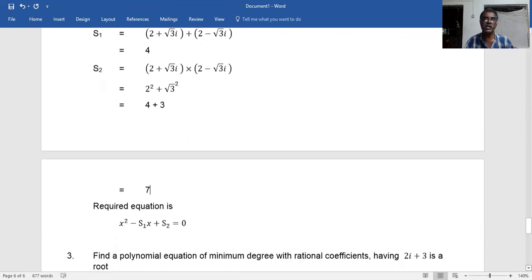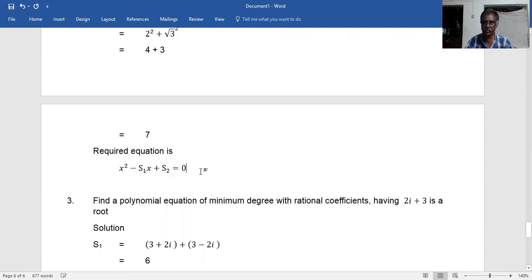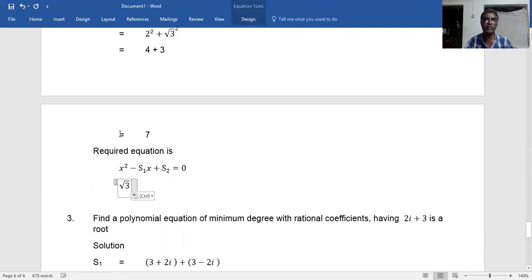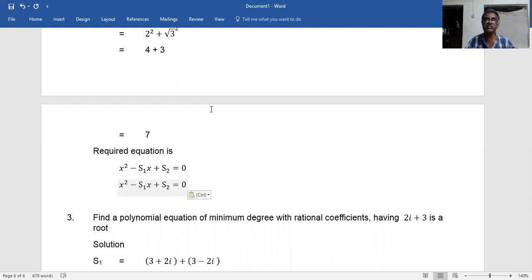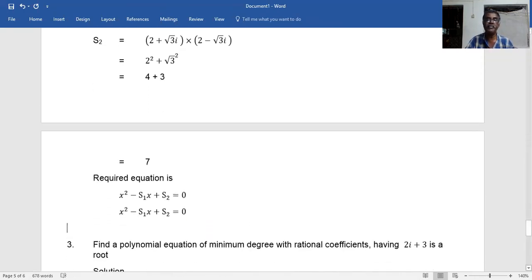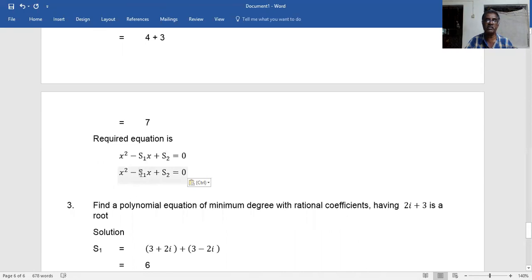The required equation is x² - S1·x + S2 = 0. Substituting S1 = 4 and S2 = 7, we get x² - 4x + 7 = 0.